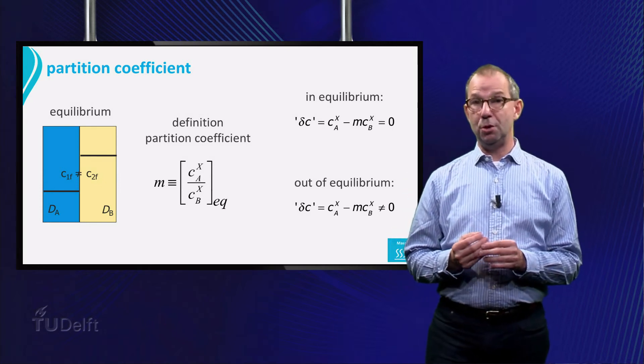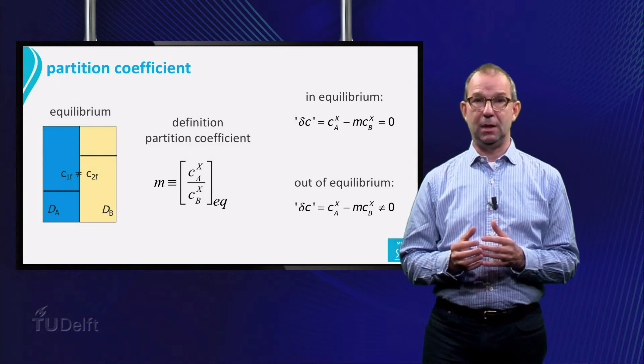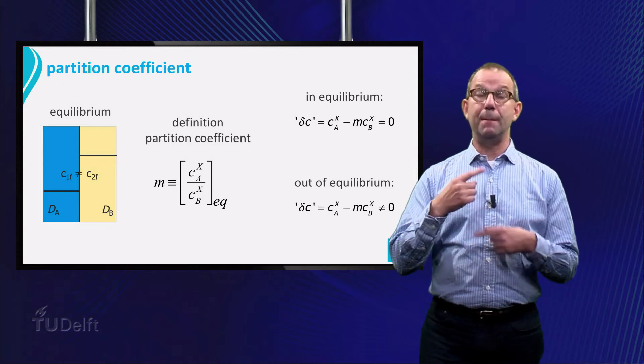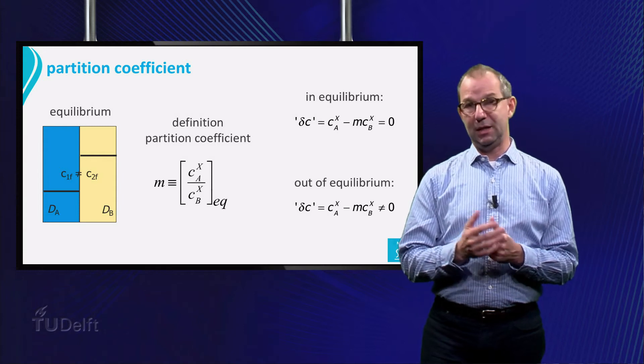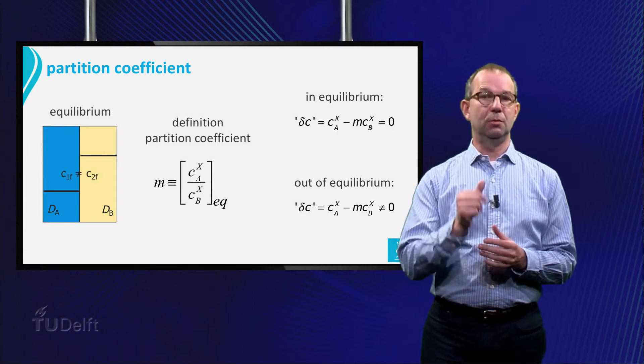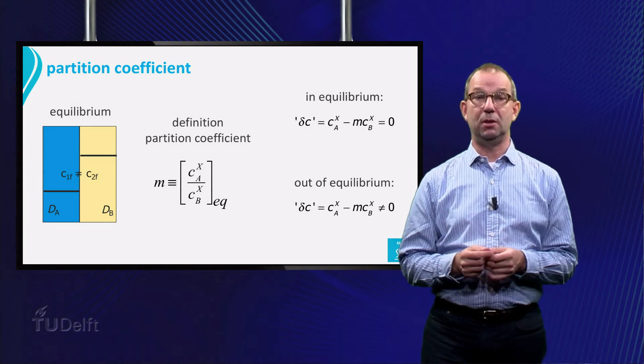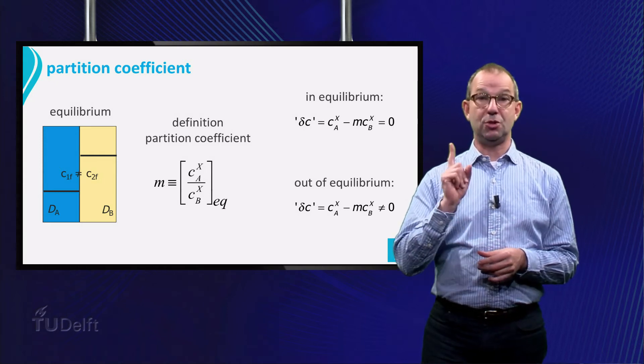Also note that if we hadn't started with heat transfer and then dealt with mass transfer, but the other way around, we would now have had an easy task. All I needed to tell you is that for heat transfer M equals 1.